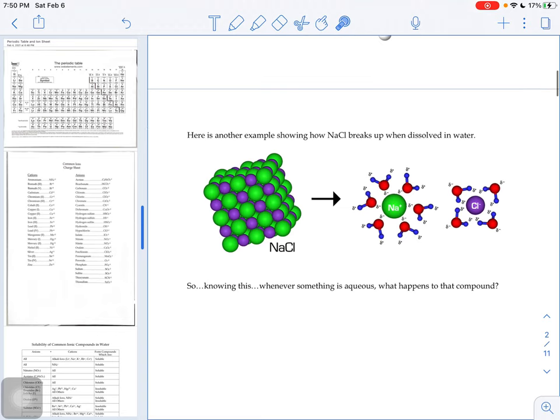Here's another example showing what happens with sodium chloride when we put that guy in water. So you can see this ionic crystal of sodium ions and chloride ions. The sodium ones are the green ones. The chloride ions are the purple.